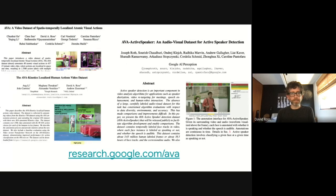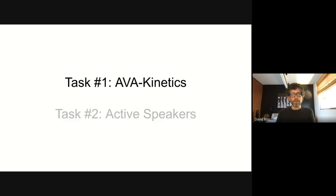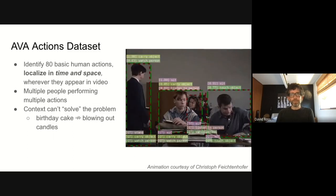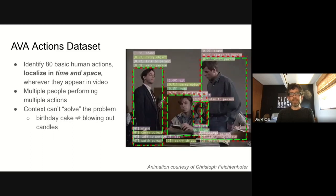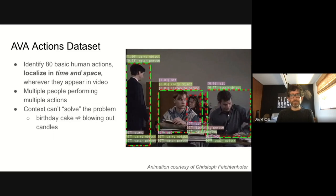Now about the task. AVA is a family of video datasets based around the task of recognizing human actions and localizing them in space and time. The two tasks we'll be focusing on this year are Generic Human Action Detection with AVA Kinetics and Speaker Detection with Active Speaker. The original AVA dataset and challenge was to identify 80 basic human actions and to localize them in time and space wherever they appear in the video.